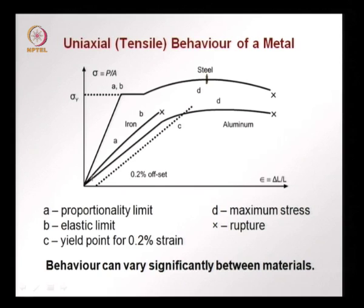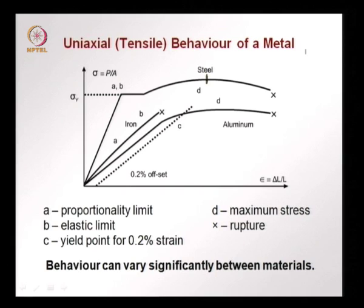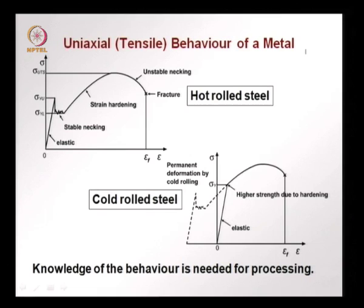We can also have some metals which do not undergo significant yielding or necking, such as cast iron. Cast iron is a brittle material and we have a slightly curved behaviour instead of a linear elastic behaviour. The proportionality limit is somewhere where the curve stops being linear, and then the elastic limit could be somewhere further, and then failure. In this case we do not really define the different regions like we had in mild steel. So what is clear is that between metals the behaviour can vary significantly.